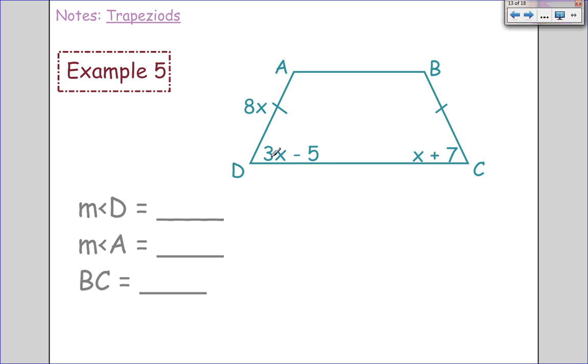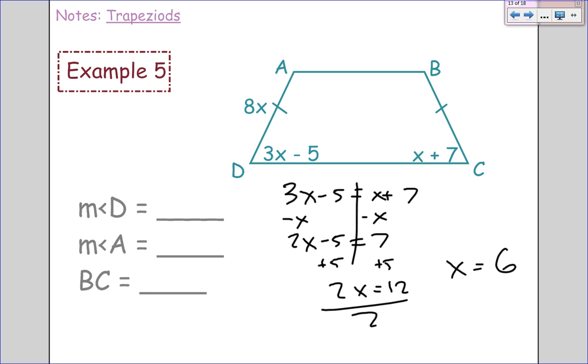Now ask yourself, pause it and try to solve for the missing x and the missing angles and sides. Let's see how you did. We've got to see if these angles are congruent, and they are because it's an isosceles trapezoid. So 3x minus 5 equals x plus 7. Now let's solve it. Subtract x: 2x minus 5 equals 7. Add 5 to both sides: 2x equals 12. Divide by 2, so x equals 6.